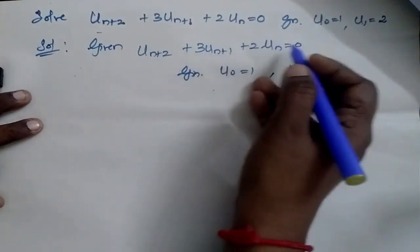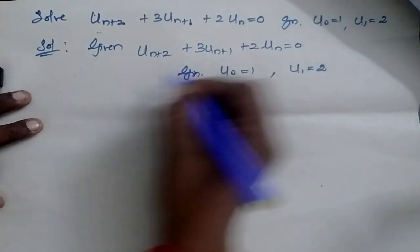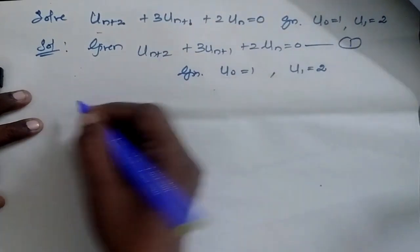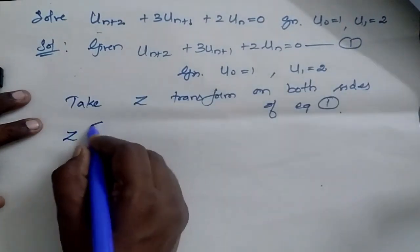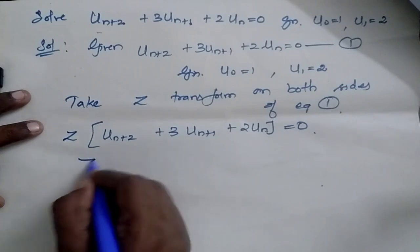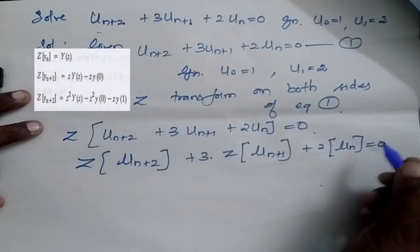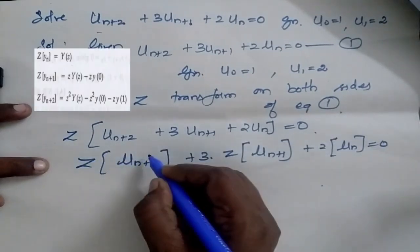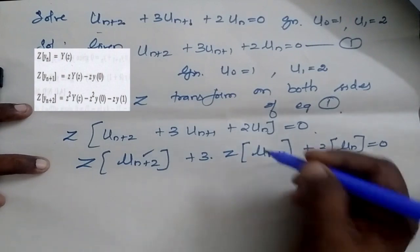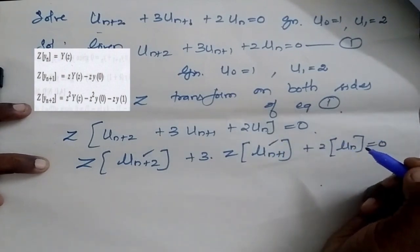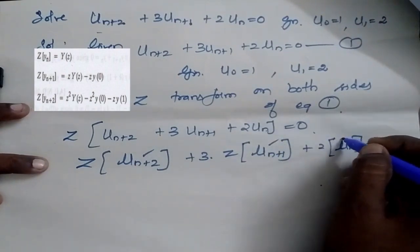Take Z-transform on both sides of this equation. So let me name this equation as 1. So I will be getting on further simplification. Now I am going to apply formulas for Z(u_{n+2}), Z(u_{n+1}), and Z(u_n).